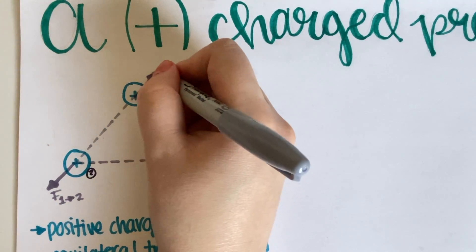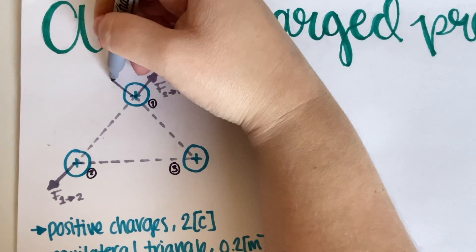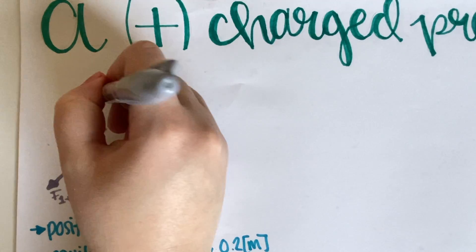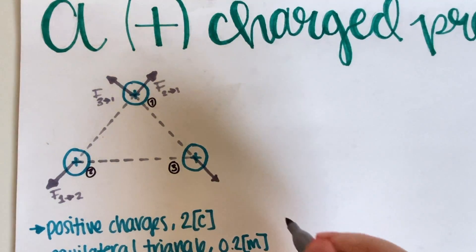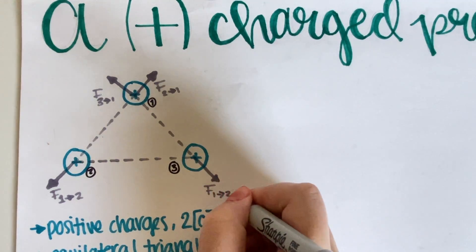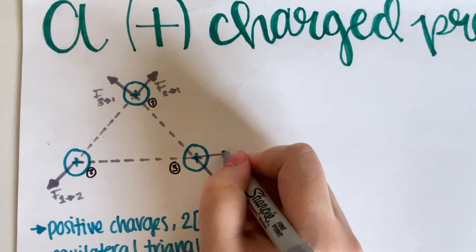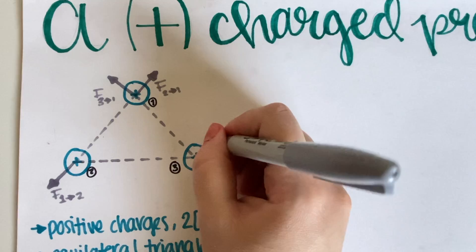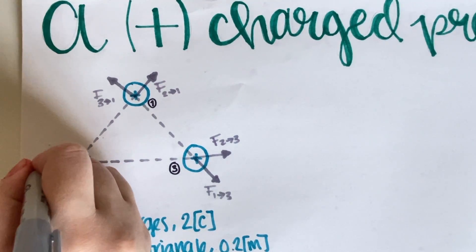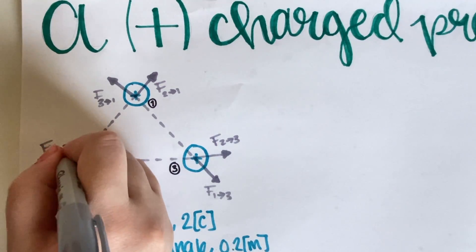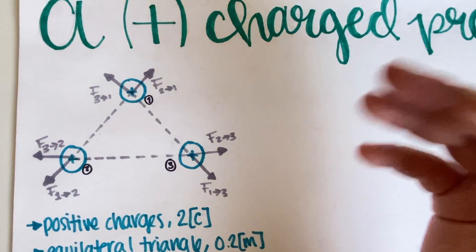These forces are equal in magnitude but opposite in direction. Now we do the same for charges 1 and 3: charge 3 puts a force on 1, and charge 1 puts a force on 3 — equal and opposite. Then for charges 2 and 3: charge 2 repels charge 3, and charge 3 repels charge 2. Each of these is a Newton's pair.